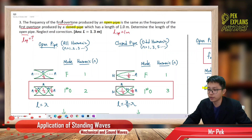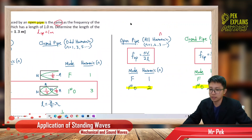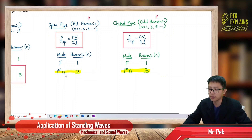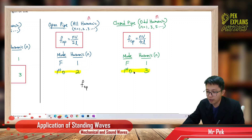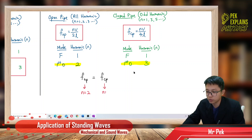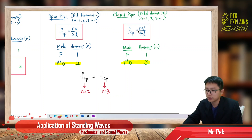The question states these two first-overtone frequencies are the same. That means the second harmonic frequency of the open pipe equals the third harmonic frequency of the closed pipe. So we set the frequency of the open pipe equal to the frequency of the closed pipe — open pipe with n=2 and closed pipe with n=3, since they are first overtones at the same frequency. We now apply the formula nv over 2L for the open pipe, substituting n with 2.